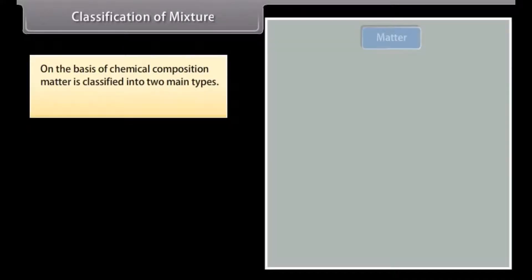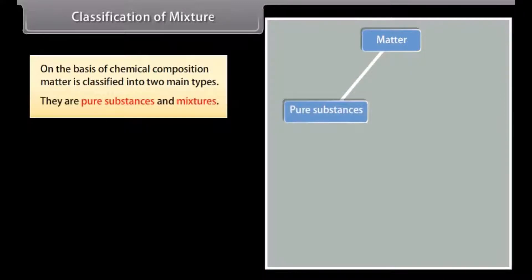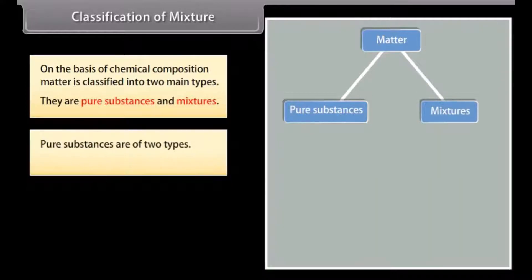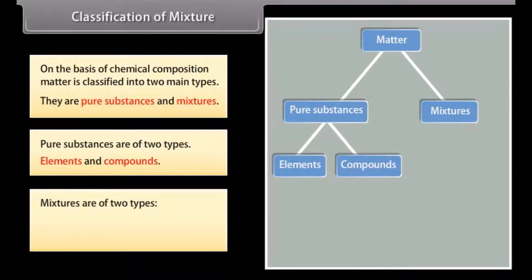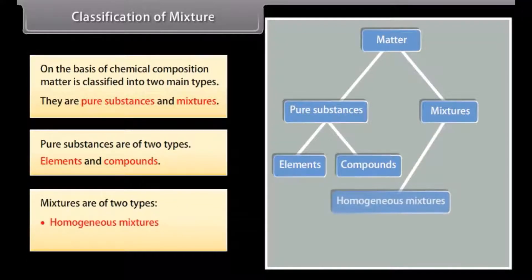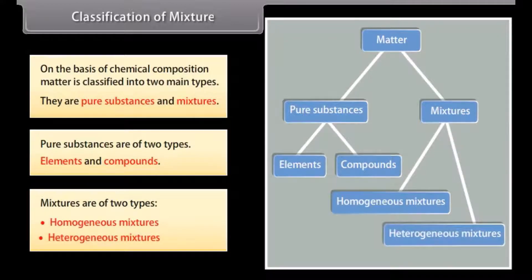Classification of mixture on the basis of chemical composition. Matter is classified into two main types: pure substances and mixtures. Pure substances are of two types — elements and compounds. Mixtures are of two types — homogeneous mixtures and heterogeneous mixtures.